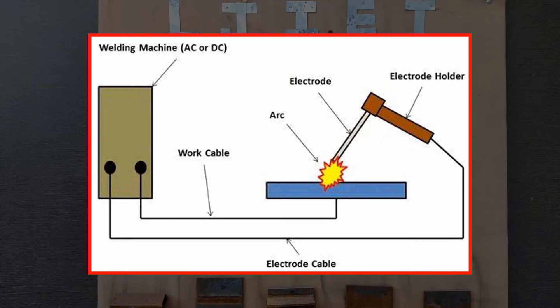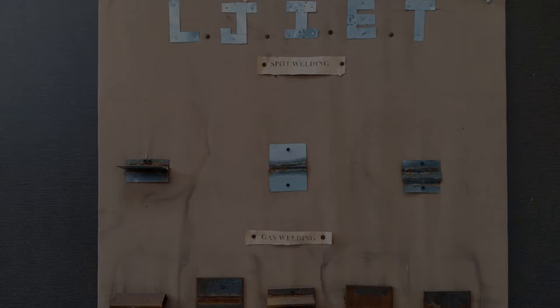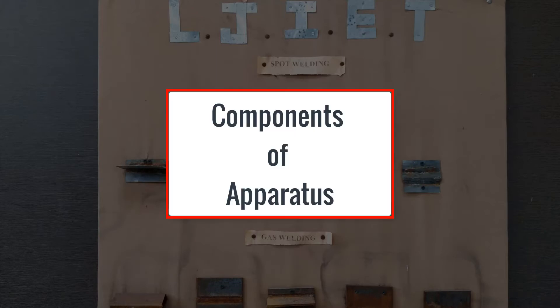The electrode is a very important component in any arc welding. Electrode is nothing but a metal rod used for transferring electrical energy. By making contact of the electrode with the work piece you can generate the arc. One important thing is that we have to connect the positive and negative terminals of our circuit to the work piece and electrode respectively.